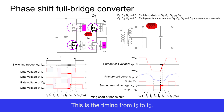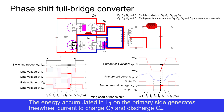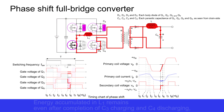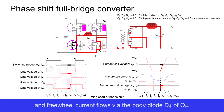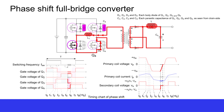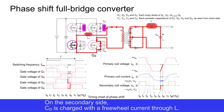This is the timing from T5 to T6. Q3 is turned off. The energy accumulated in L1 on the primary side generates freewheel current to charge C3 and discharge C4. Energy accumulated in L1 remains even after completion of C3 charging and C4 discharging, and freewheel current flows via the body diode D4 of Q4. On the secondary side, CO is charged with the freewheel current through L.